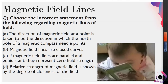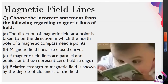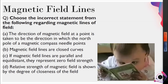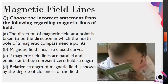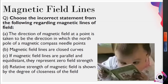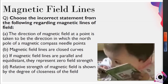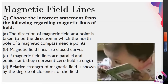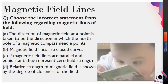Choose the incorrect statement from the following regarding magnetic lines of force. Option A: the direction of magnetic field at a point is taken to be the direction in which the north pole of a magnetic compass needle points. Option B: magnetic field lines are closed curves. Option C: if magnetic field lines are parallel and equidistant, they represent zero field strength. Option D: relative strength of magnetic field is shown by the degree of closeness of the field.